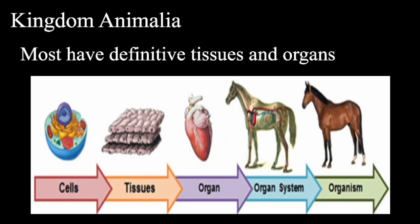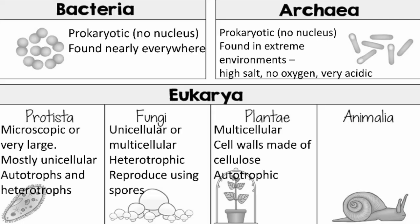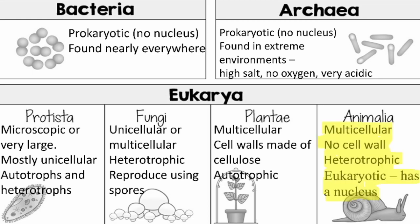Going to our worksheet: Animalia — multicellular, no cell wall. These organisms are heterotrophic. They are eukaryotic cells, which means they have a nucleus.